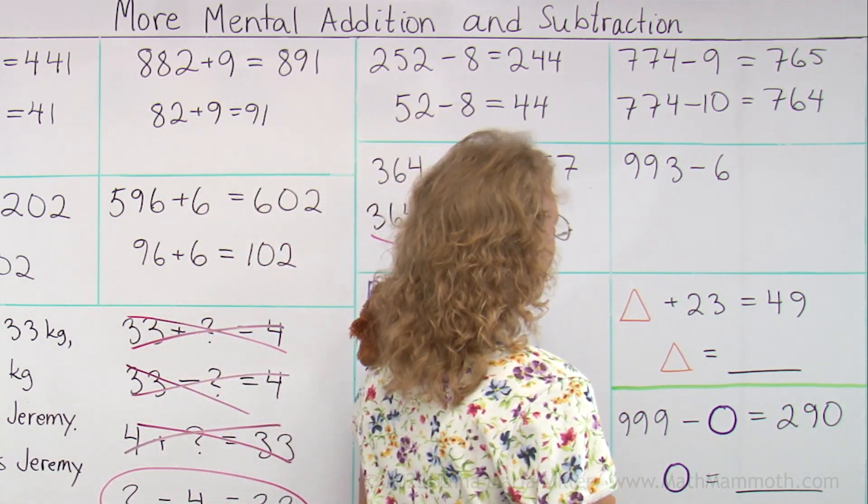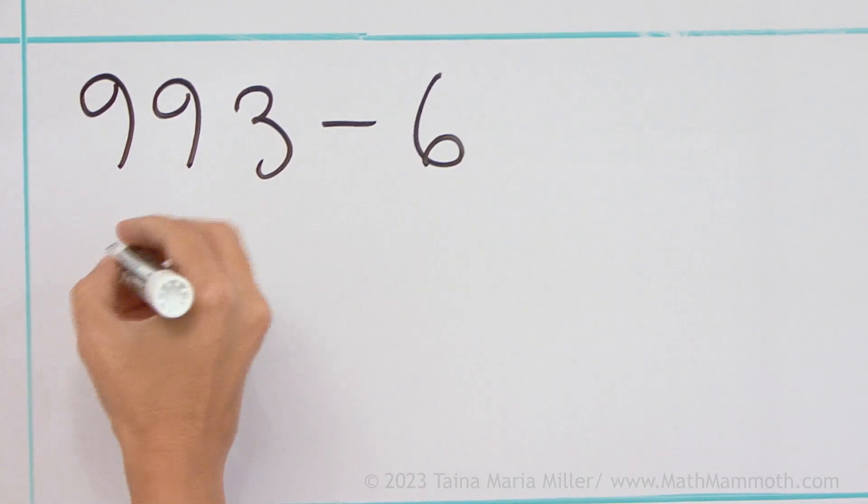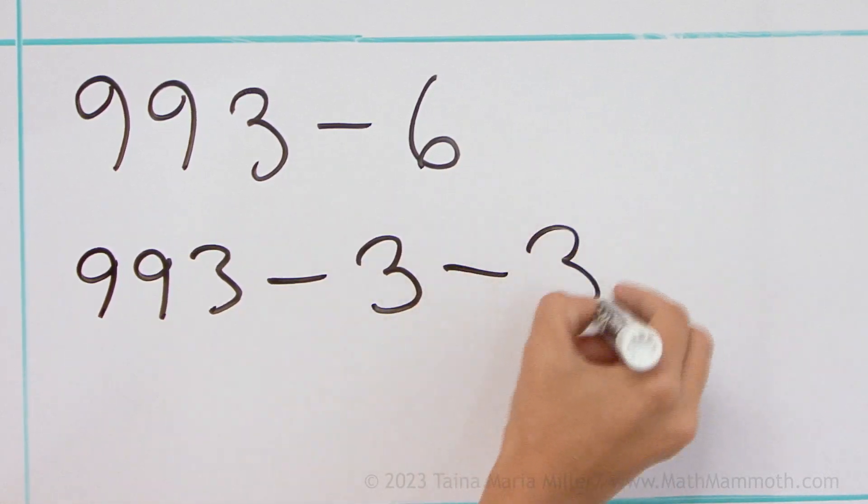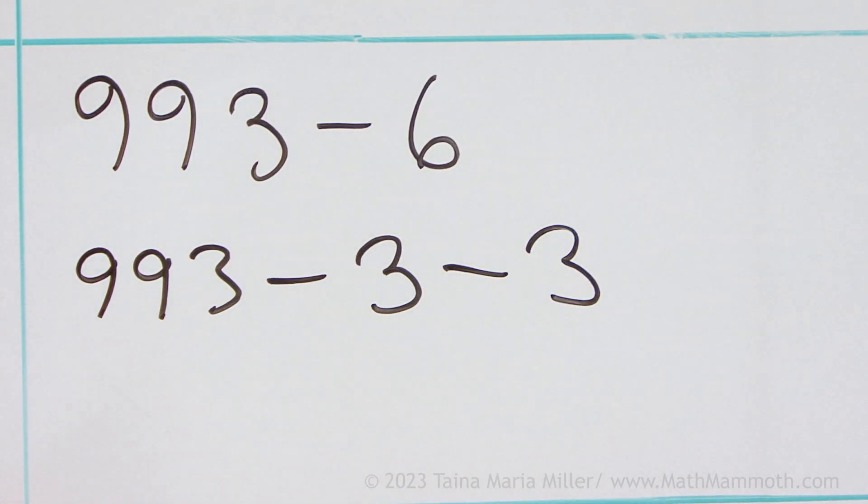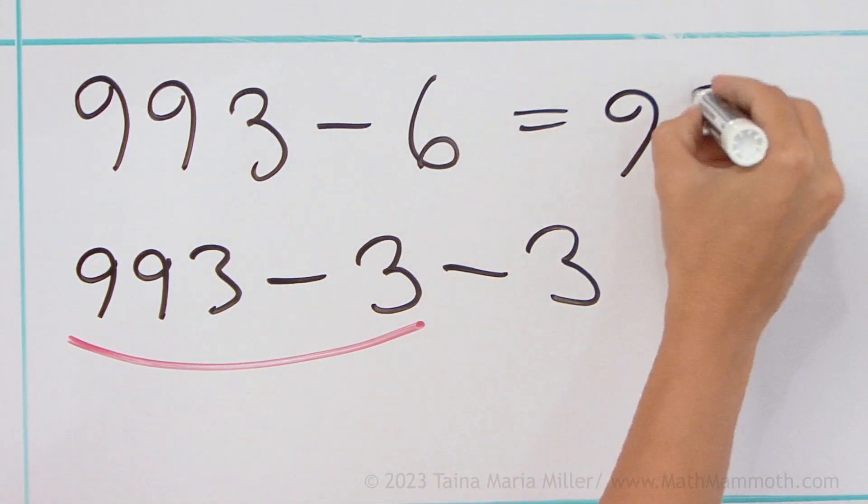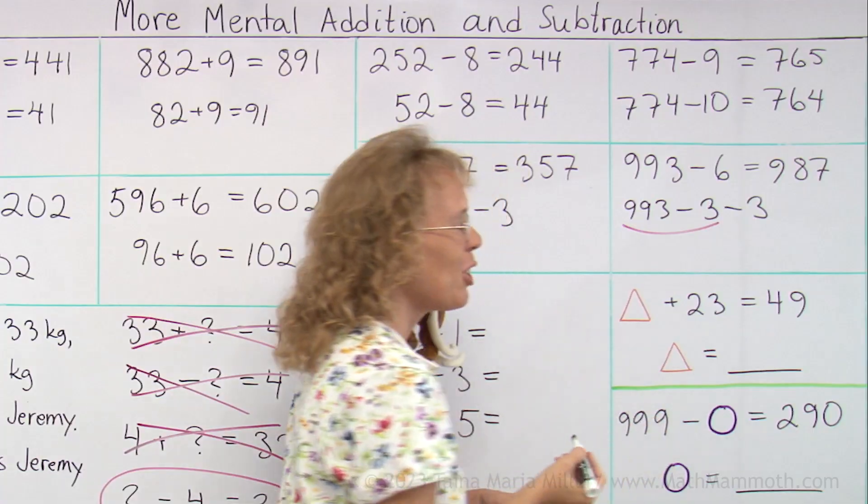993 minus 6. Let's do the same. First subtract 3, then another 3. So it becomes 990, this one here, minus 3. 990 minus 3, so 987. Okay, I hope you're following me.